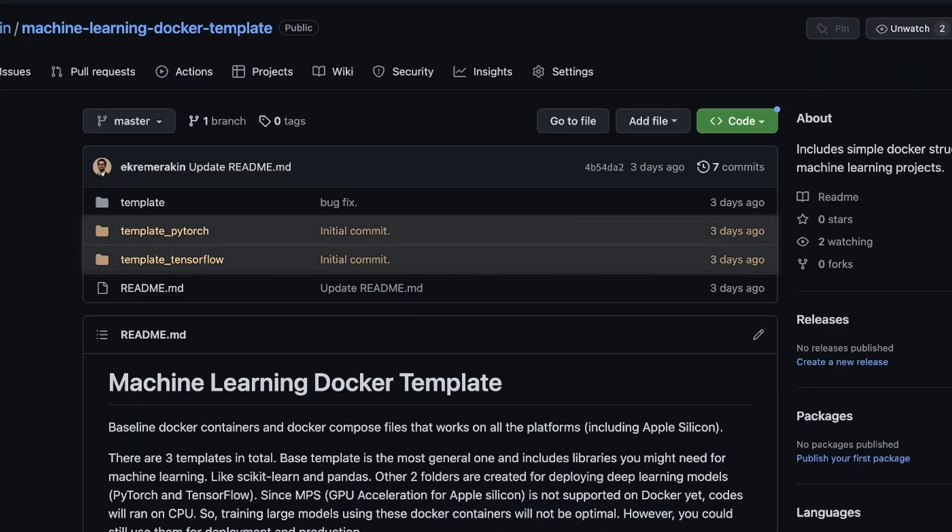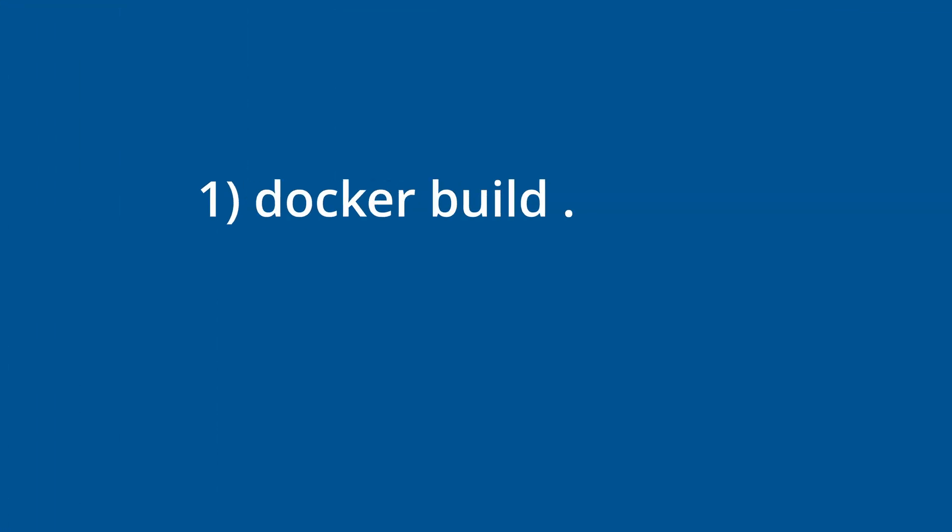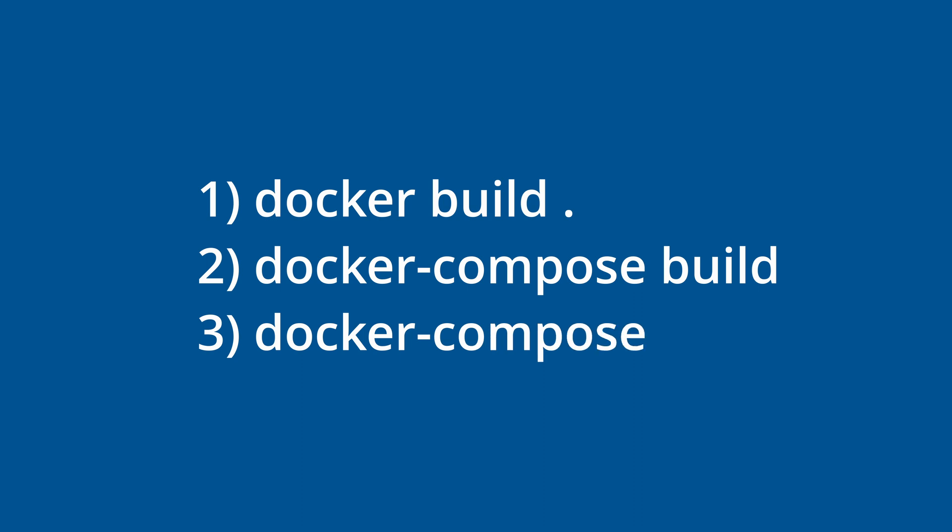In the GitHub repository I shared, I also included templates for PyTorch and TensorFlow. To run them, apply the same procedure: docker build, docker-compose build, and docker-compose up. You can use either Python scripts or notebooks — both work the same way. In conclusion, utilizing Docker to run your machine learning algorithms on M1 or M2 Macs is a game changer. With Docker, your development environment is isolated from your host environment, allowing you to make the most of your hardware.